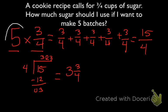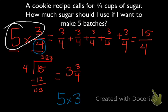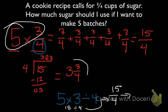What we basically did is took our whole number, multiplied it by our numerator, and then divided that product by our denominator. So that's going to be the algorithm that we use again. That would be 5 times 3 divided by 4. 5 times 3 is 15. And that divided by 4 would first give us the improper fraction 15 fourths, which we then simplified into 3 and 3 fourths.